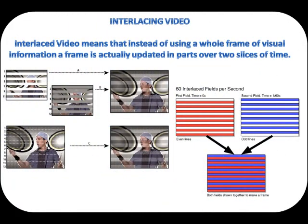Interlaced video means that instead of using a whole frame of video information and presenting these stills in rapid succession to simulate movement, a frame is actually updated in parts over two slices of time. The first slice draws the odd number scan lines, and then the next draws the evens. When displayed, we see both the even and odd lines at once, and don't realize that one set is slightly delayed. Rather than view whole entire frames at a lower rate that would flicker and have jerky motion, we can create the illusion of a smoother and sharper image by interlacing half frames. The downside of interlaced video is that fast motion may appear slightly blurred.